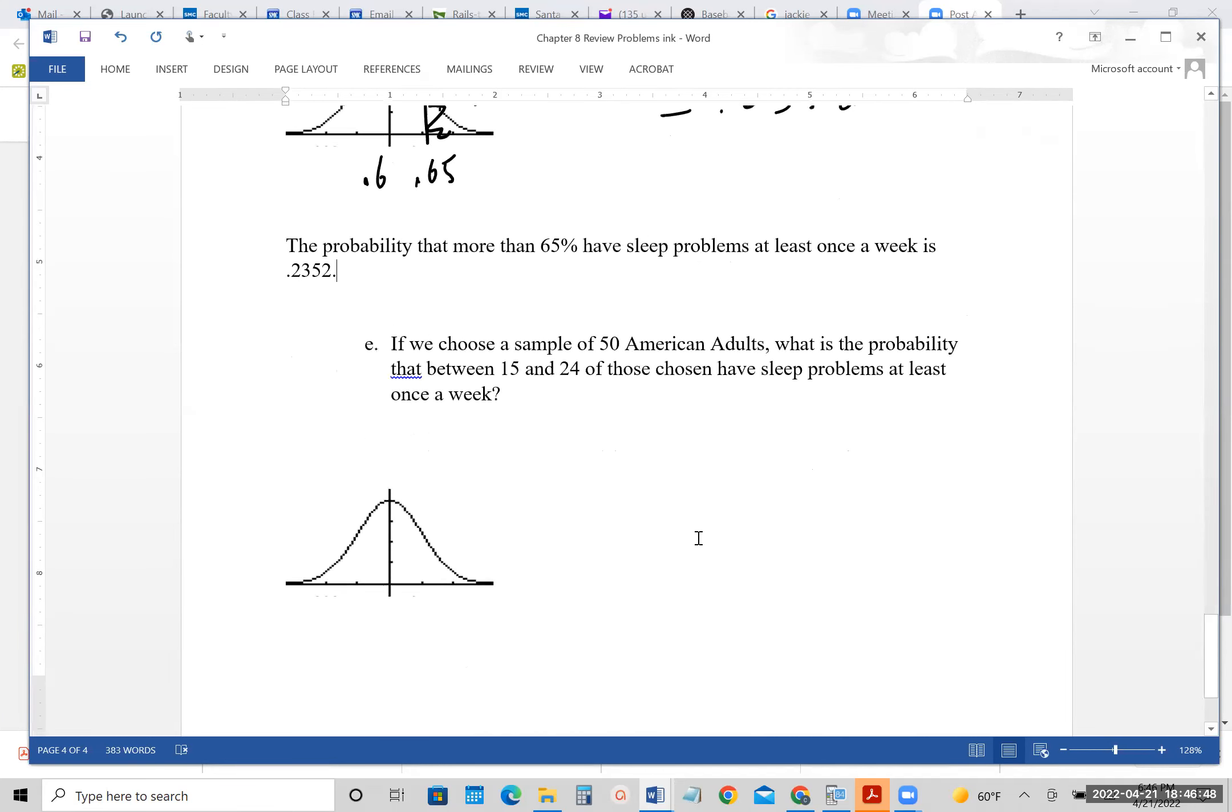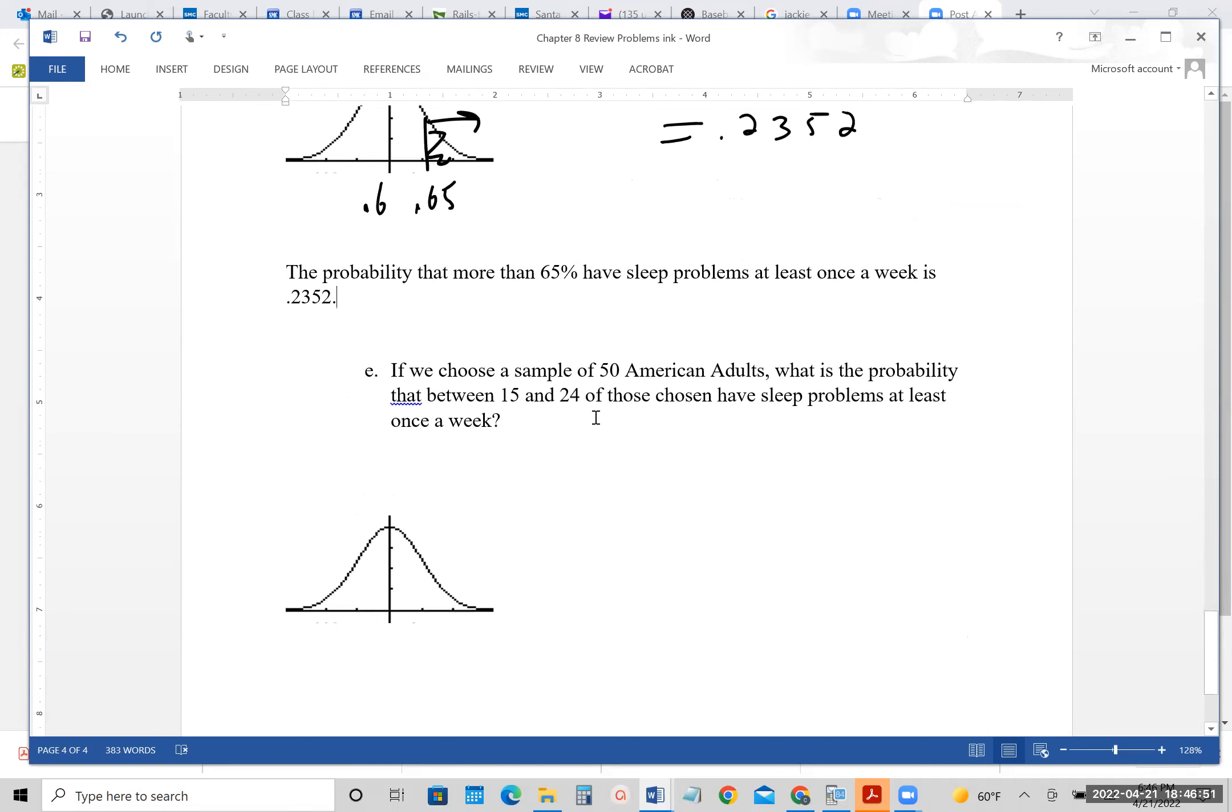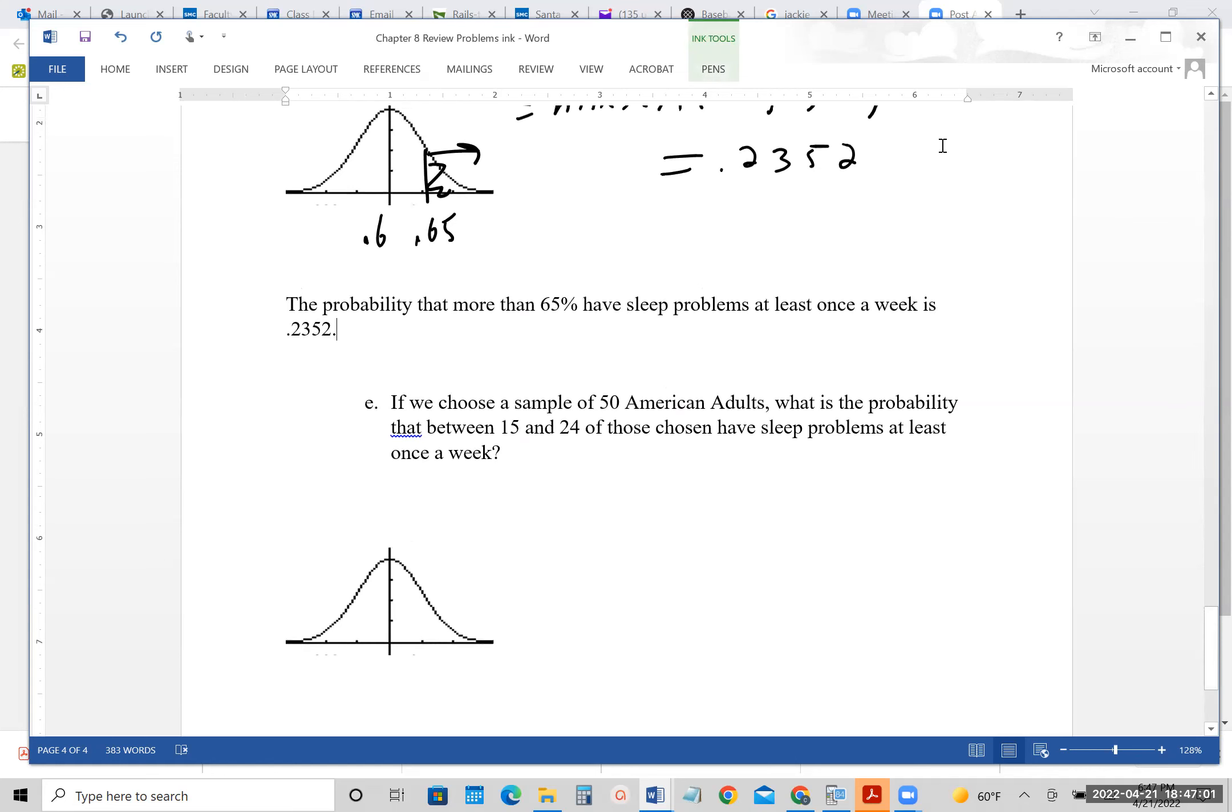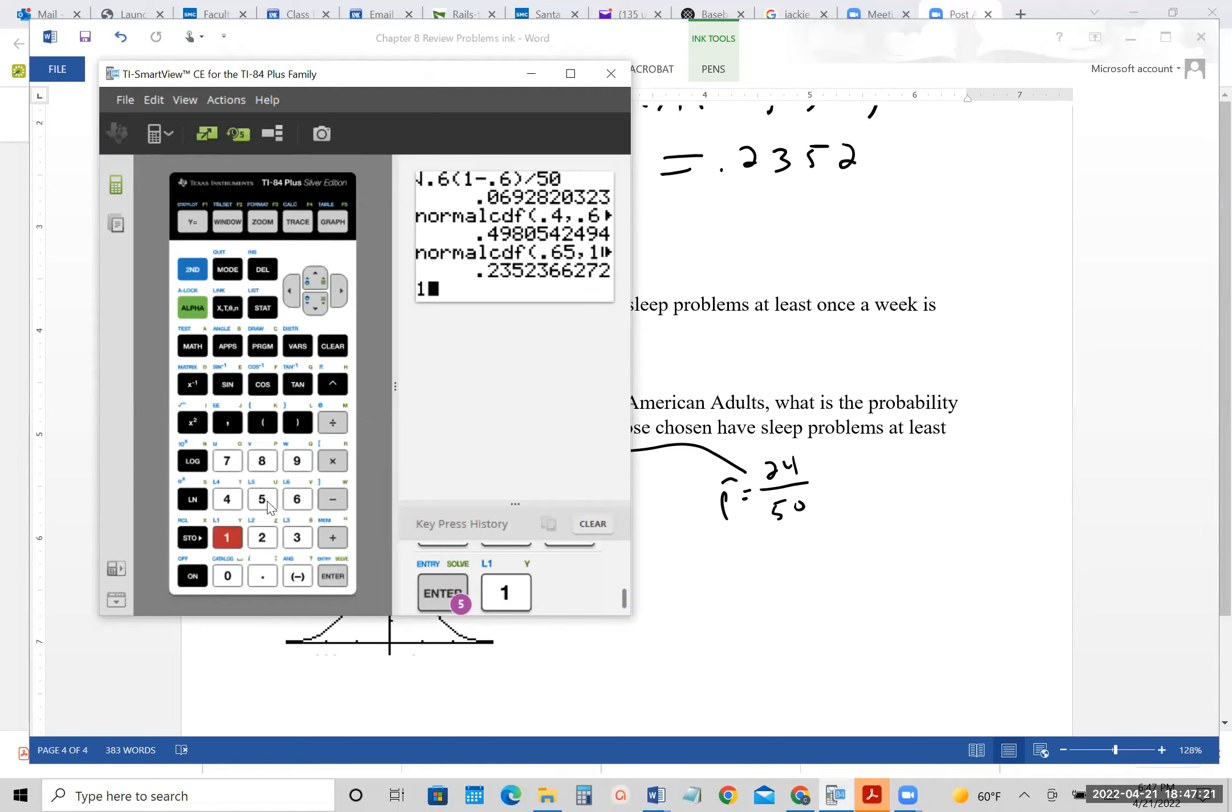So the probability that more than 65% of them have sleep problems at least once a week is 0.2352. And that would be D. And then I think we just have one more part, E. What is the probability that between 15 and 24 of those have sleep problems? So for this one, we need P hat. So for the first one, we just have to recognize, P hat here would be 15 over 50. And then for this one, it would be 24 over 50. So we have two P hats. We just have to see what they would be. So let's pull out our handy-dandy calculator. 15 divided by 50 would be 0.3. And then 24 divided by 50 would be 0.48.